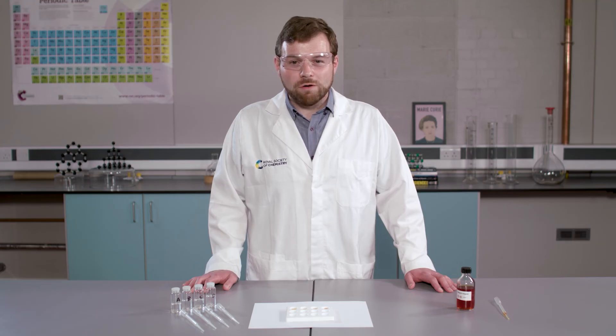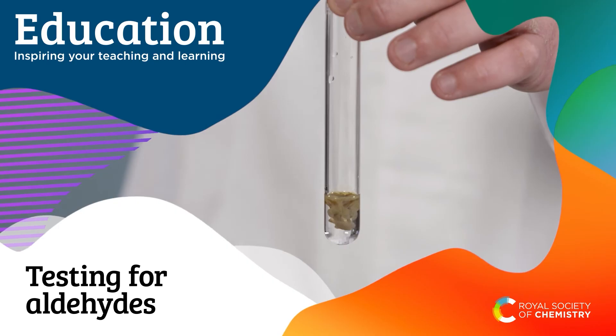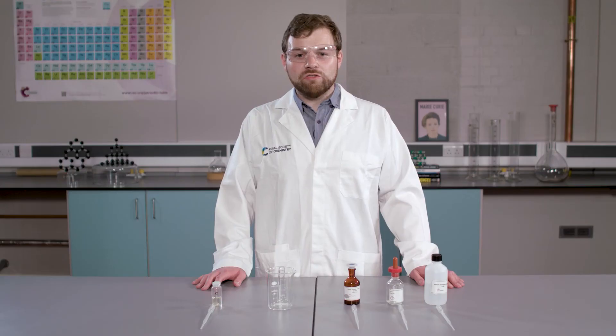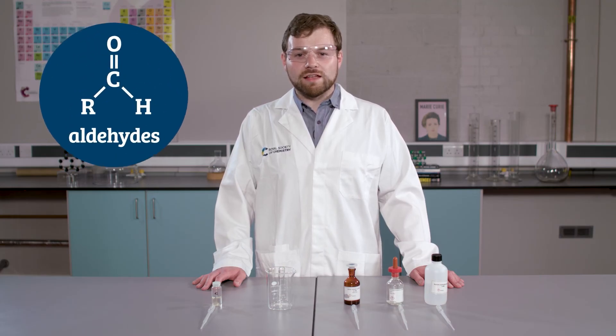I am now going to show you another test for aldehydes. This test uses Tollens reagent which contains silver ions. When added to aldehydes, the silver ions in Tollens reagents are reduced to silver atoms. This test is sometimes called the silver mirror test, and you will see why. I am going to make and use Tollens reagents in situ. This is because if left to stand, explosive silver compounds could form. As you can imagine, I am also going to be doing this experiment on a small scale.